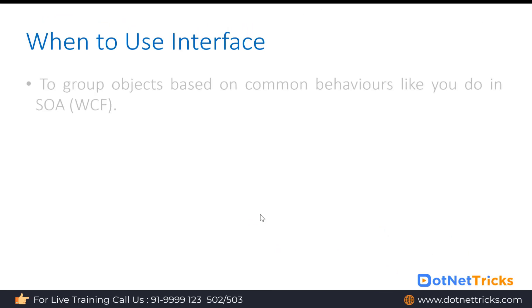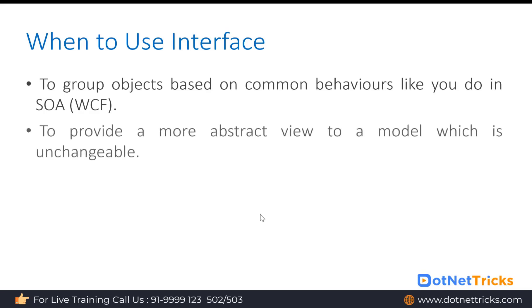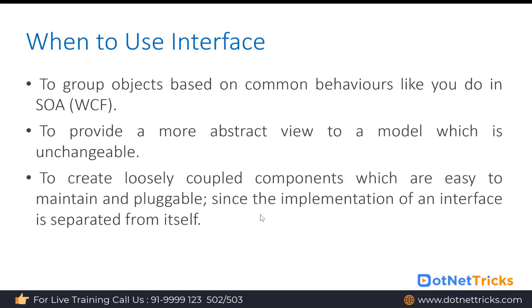When to use interface: use interface to group objects based on common behaviors, as done in service-oriented architecture like WCF. Also use it whenever you want to provide a more abstract view to a model that is unchangeable, since the contract is always unchangeable. In service-oriented architecture with WCF we prefer to use interfaces. Interfaces are also helpful to create loosely coupled components which are easy to maintain and pluggable.